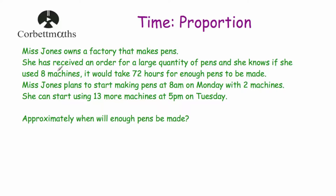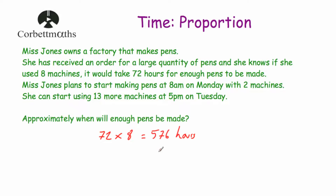Our last question says Miss Jones owns a factory that makes pens and has received an order for a large quantity. If she used 8 machines, it would take 72 hours. She plans to start at 8am Monday with 2 machines, then use 13 more machines at 5pm on Tuesday. First, if she uses just one machine it would take 8 times longer: 72 multiplied by 8 is 576 hours for one machine to make enough pens.